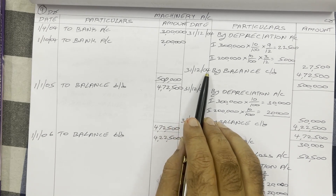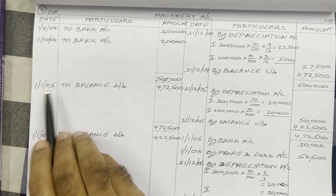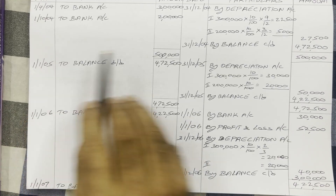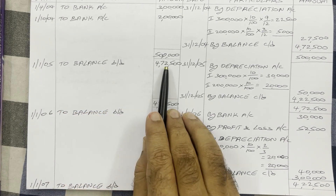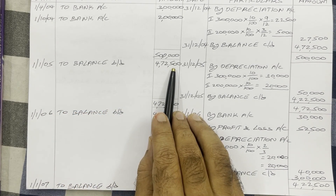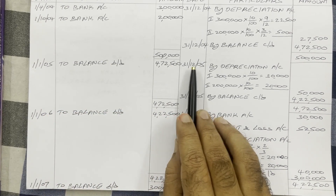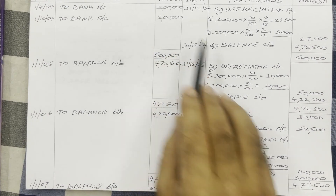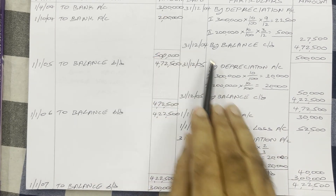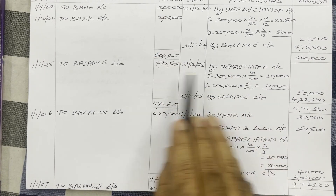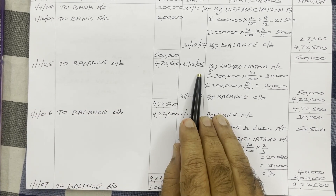Coming to the second year: on 1st January 2005 we bring the balance forward on the debit side — balance brought down four lakh seventy-two thousand five hundred. The last date of 2005 is 31st December 2005. On that day we have the same two assets — there is no additional purchase and no sale — so both assets are continuing for the full year from 1st January to 31st December.